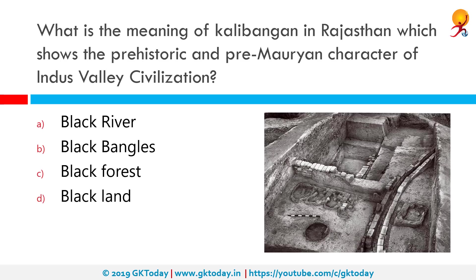What is the meaning of Kalibangan in Rajasthan, which shows the prehistoric and pre-Mauryan character of Indus Valley civilization? The correct answer is Black Bangles. Kalibangan literally means Black Bangles and is located in Pilibangan between Suratgarh and Hanumangarh in Hanumangarh district of Rajasthan. Kalibangan has given evidence of both pre-Harappan culture in the lower layer and Harappan civilization in the upper layer.